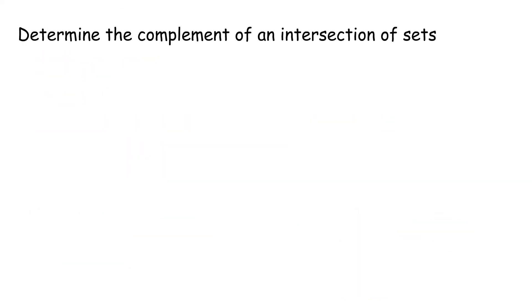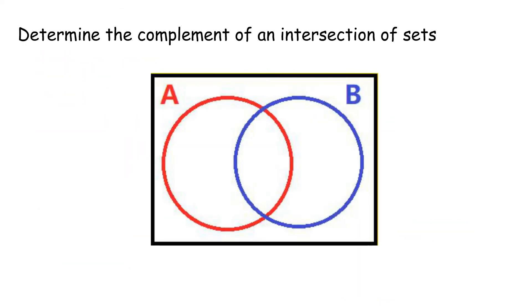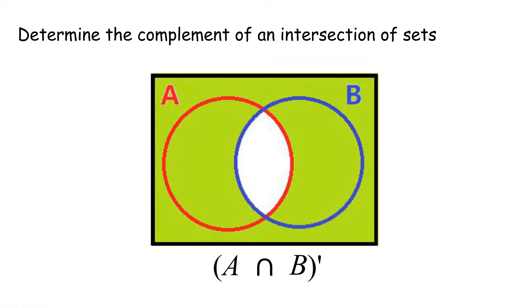Determine the complement of an intersection of sets. The complement of an intersection of sets is written using the symbol (A intersect B)'. This is read as the complement of the intersection of sets A and B.